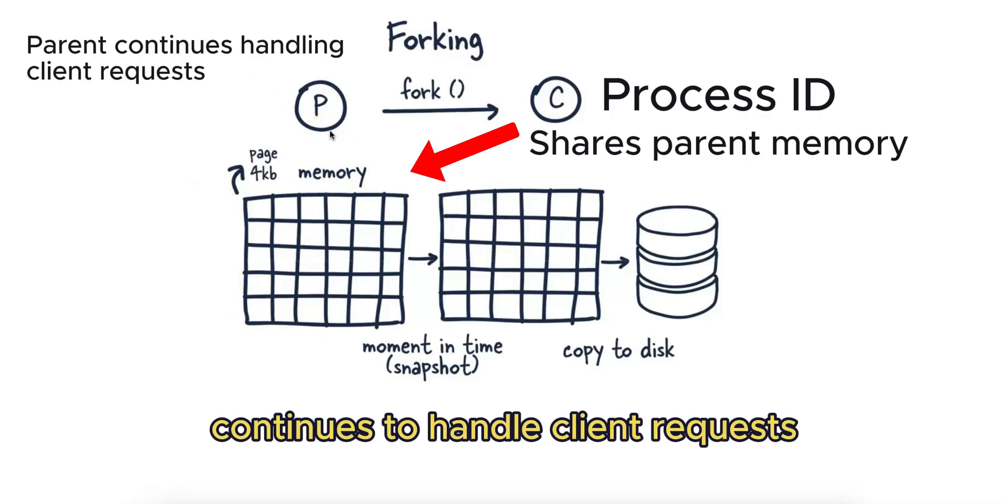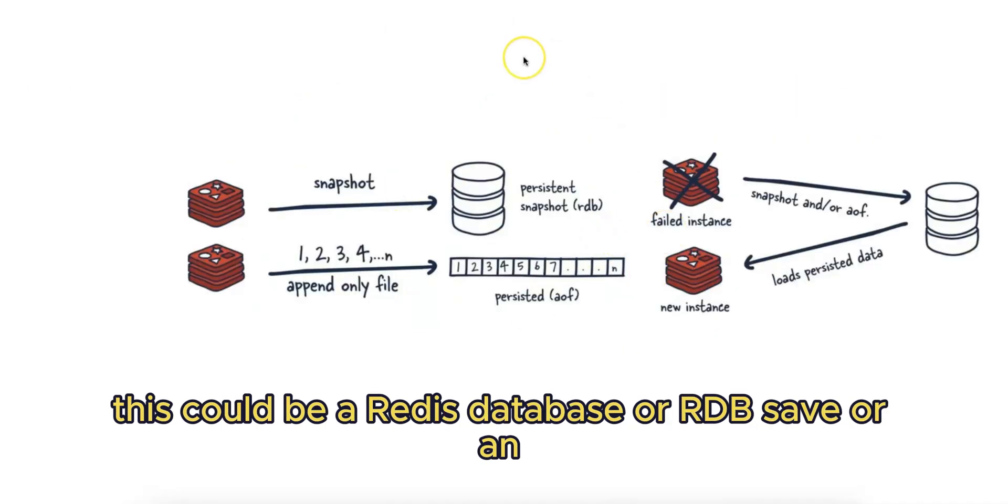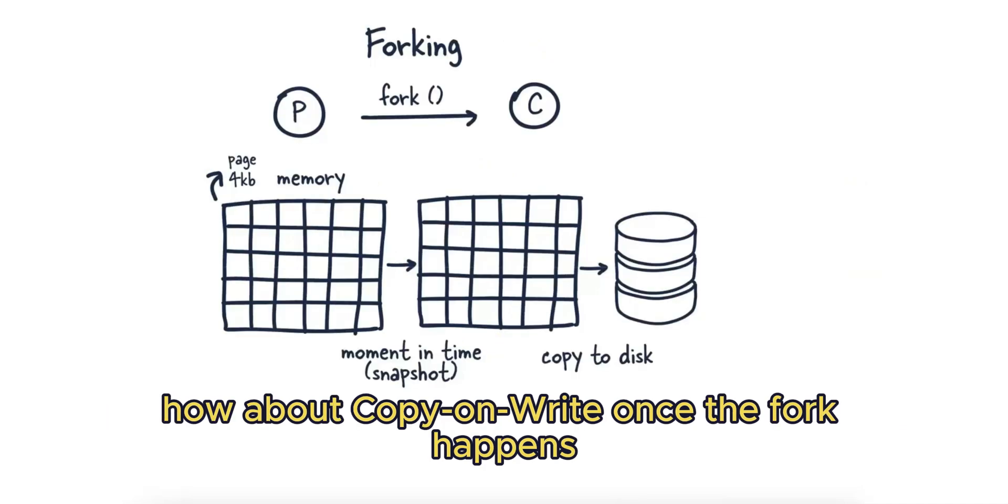The child process performs the snapshot to disk. This could be a Redis database (RDB) save or an append-only file (AOF) write—more details on this later. How about copy-on-write?